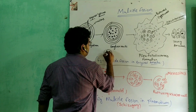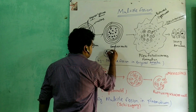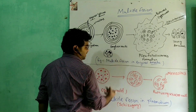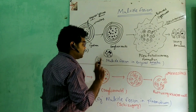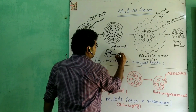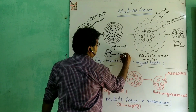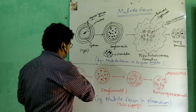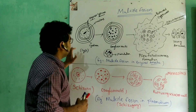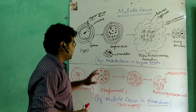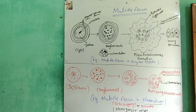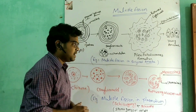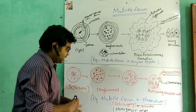Thirdly, there is spore formation. Multiple fission also occurs in Plasmodium. Plasmodium is called the malarial parasite. Plasmodium undergoes multiple fission and is a uninucleate cell.